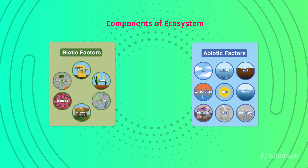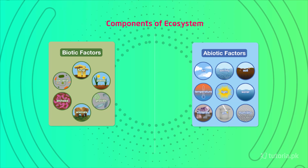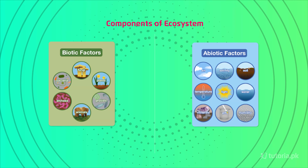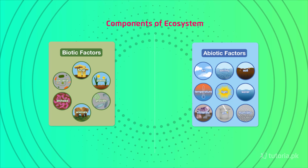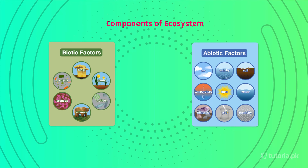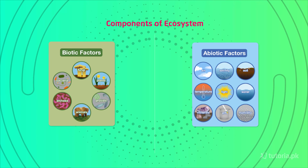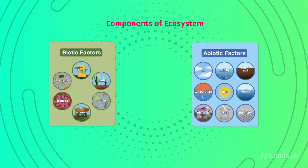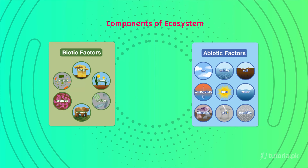On the other hand, abiotic factors include air, water, light, soil, and temperature — these are all abiotic components.